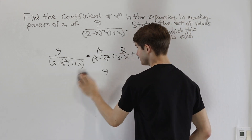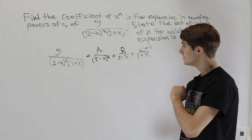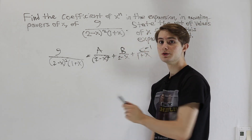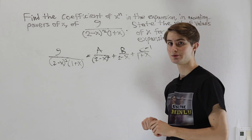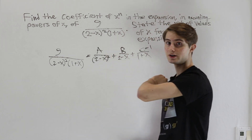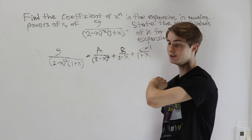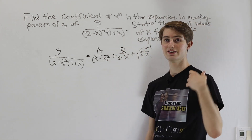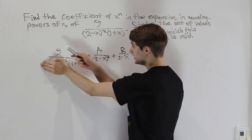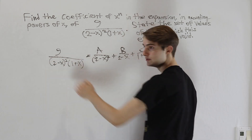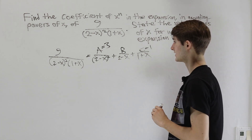There's one more term we can find with the cover-up method. We can always use it for the coefficient where the denominator is to the highest power, so we can use it for A but not B. Setting 2 minus x equal to zero gives x equals 2. Covering up (2 minus x) squared, we get 9 over (1 plus 2), which is 9 over 3, equals 3. So A equals 3.